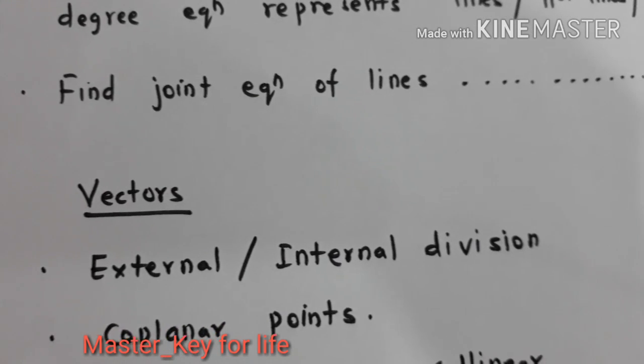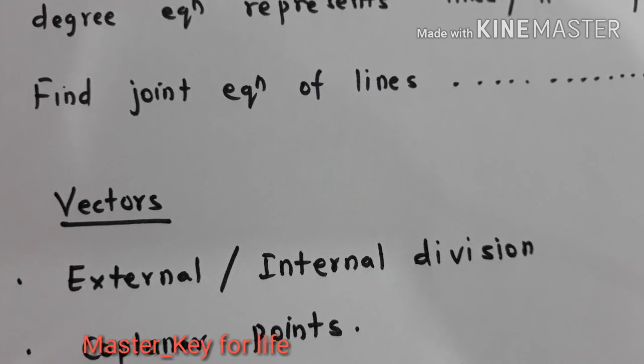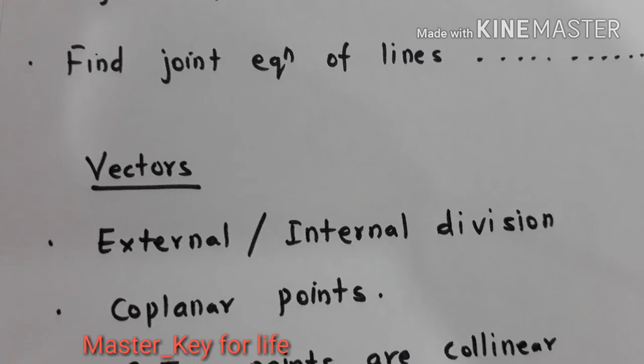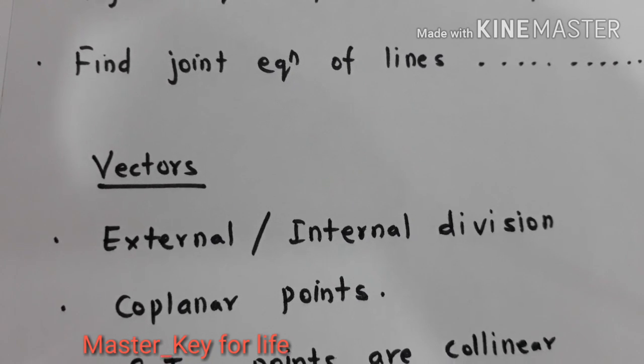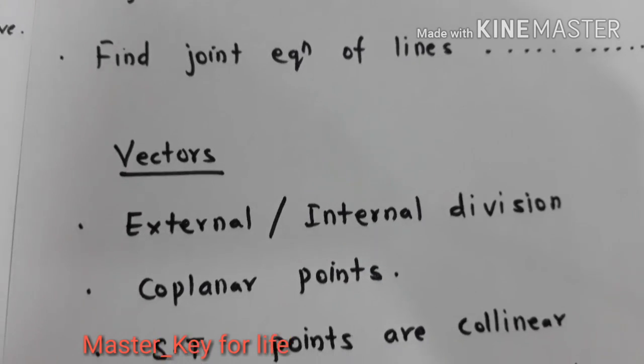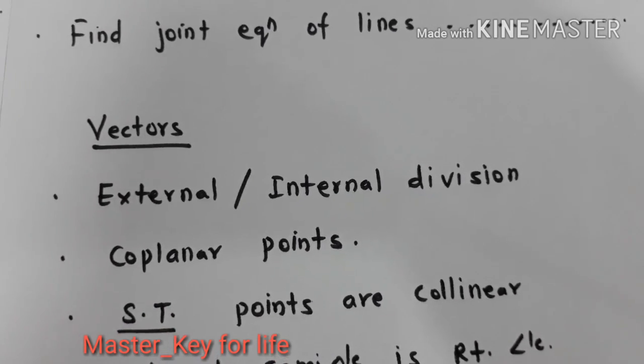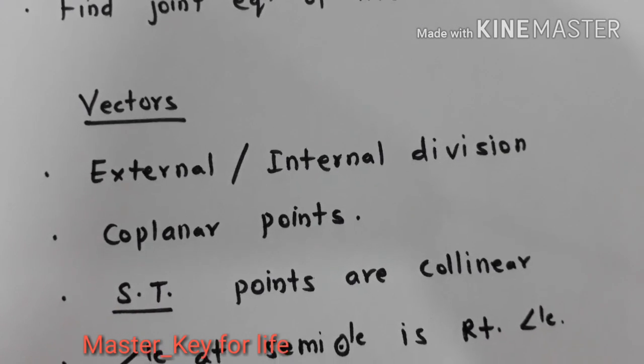Let's move on to vectors. External division formula, internal division formula, the proofs. Sometimes they give us the points and we have to prove whether the points are coplanar or not. Or sometimes the points are coplanar and we are asked to find out some unknown. Then showing that the points are coplanar. Very important.